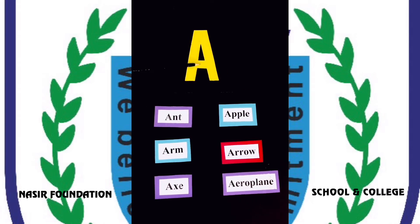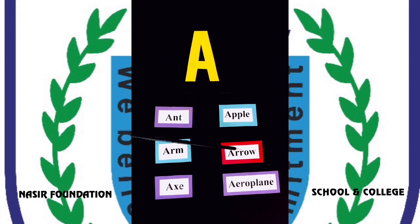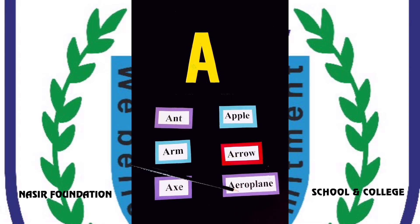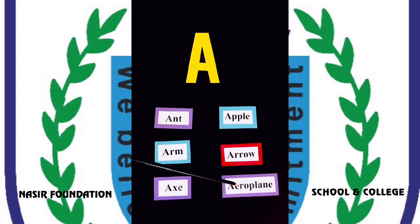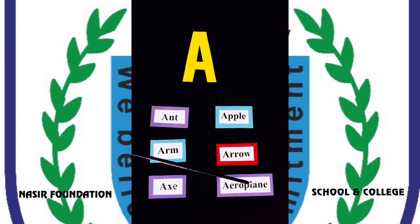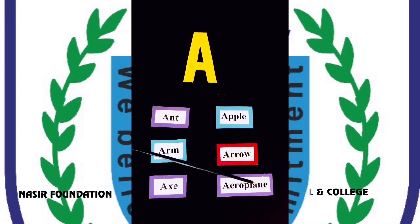A — arrow. A-R-R-O-W, arrow. A — aeroplane. A-E-R-O, P-L-A-N-E, aeroplane.